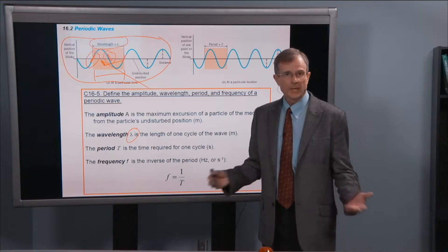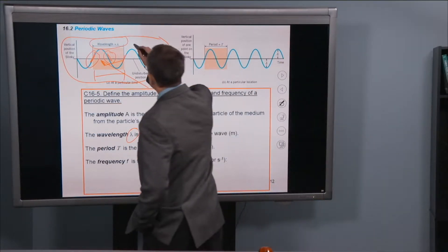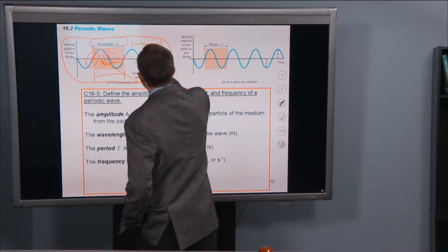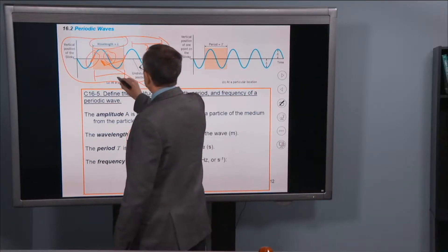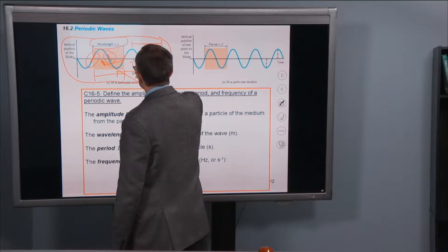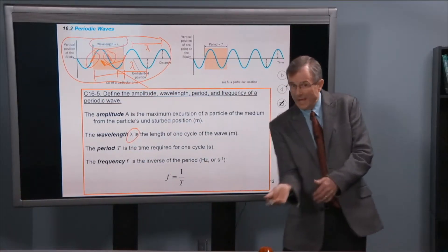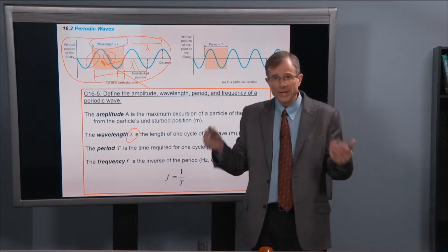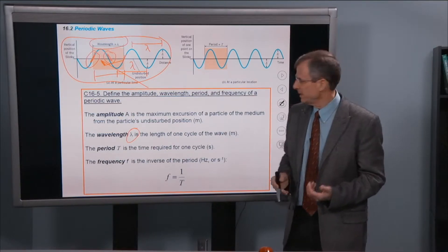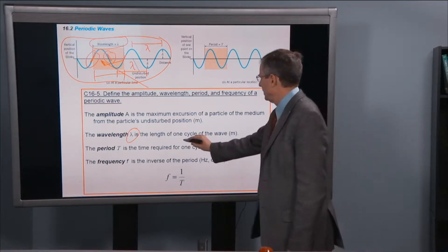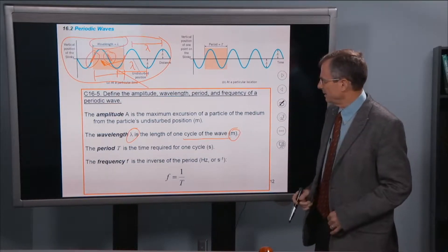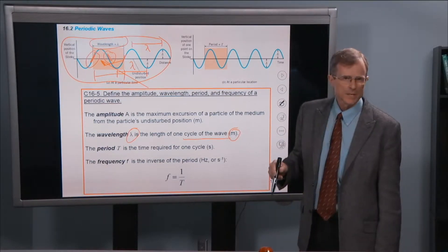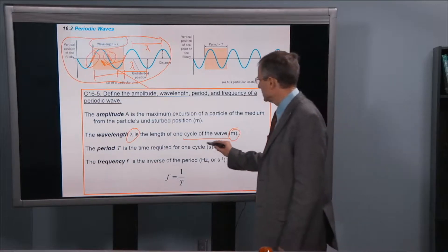You can also look at two crests, the distance between two crests, that also gives the wavelength. Or two troughs will give the wavelength as well. Distance between two valleys in the wave, or two peaks in the wave, two identical points on the wave give you the wavelength. It's the length of one cycle, it's measured in meters, and the period is the time required for one cycle of the wave.